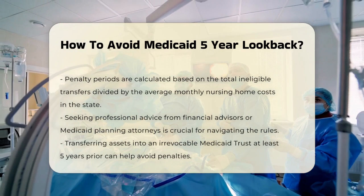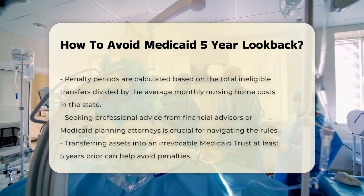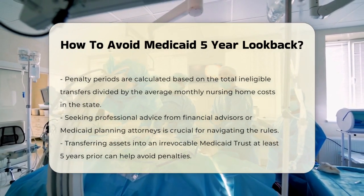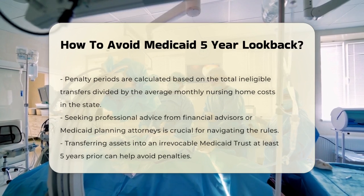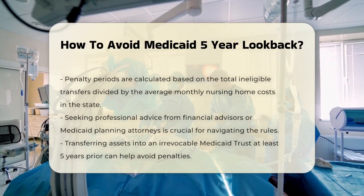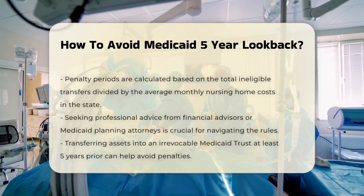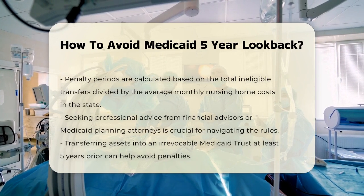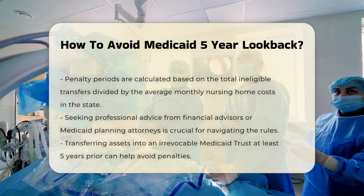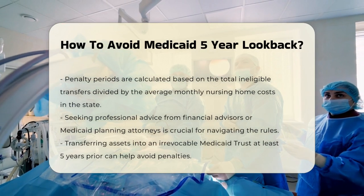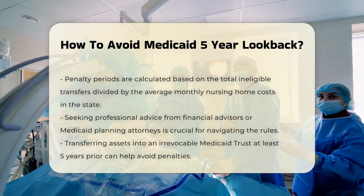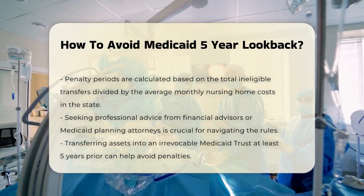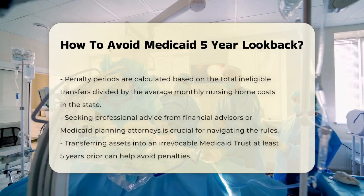Strategies to avoid penalties. First, seek professional advice. Working with a financial advisor or Medicaid planning attorney is highly recommended. They can help you understand the rules and develop a personalized plan to protect your assets. Second, use irrevocable trusts. Transferring assets into an irrevocable Medicaid trust at least five years and one day before applying for Medicaid can help avoid penalties.